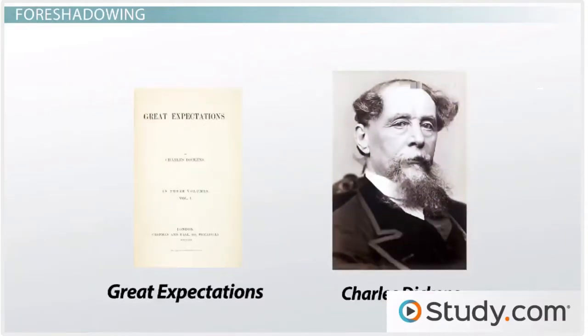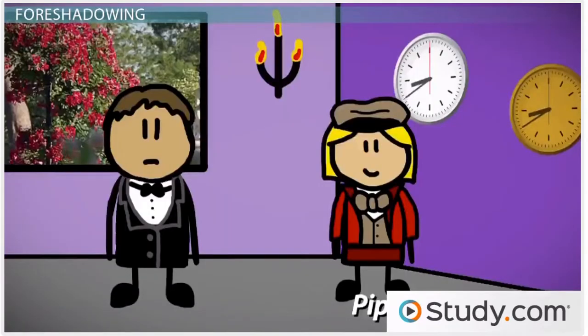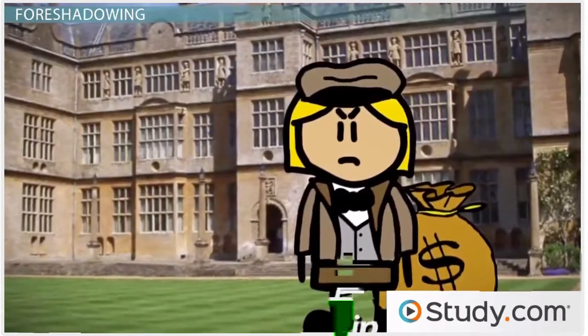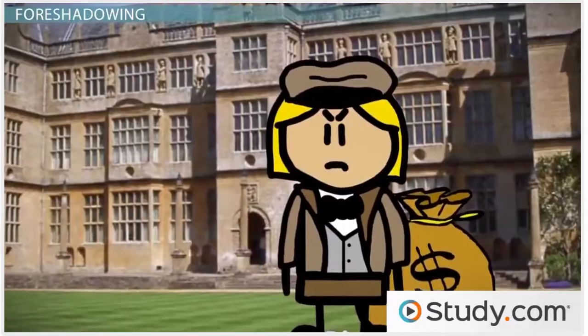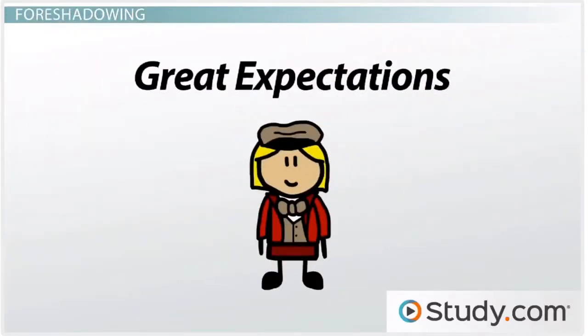The novel Great Expectations by Charles Dickens tells the story of an orphan boy born into poverty in the English countryside, and how, through a string of seemingly random events, his fortunes are changed and he is able to move up in society. Even the title, Great Expectations, tells the reader that this is a book about the hopes and dreams of a young person.